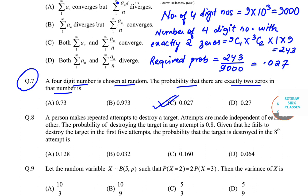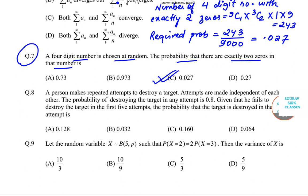Now we move on to question number eight. Question number eight says that a person makes repeated attempts to destroy a target. Attempts are made independent of each other. The probability of destroying the target in any attempt is 0.8.